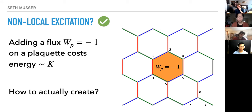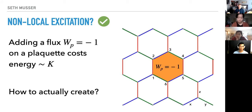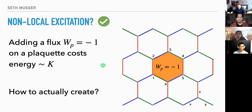The question was also whether the Majorana description tells us something about the generic physics when perturbations are added. I think it's somewhat of an unphysical tool used to solve this one specific case. Later, people do parton constructions — Ashvin did an interesting parton construction of this model with a magnetic field and mapped back to Majoranas, but that was for historical reasons rather than for any fundamental insight gained.